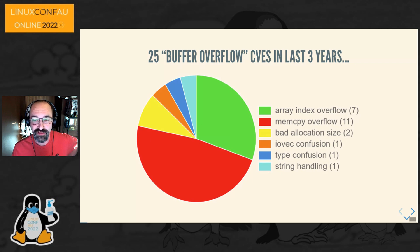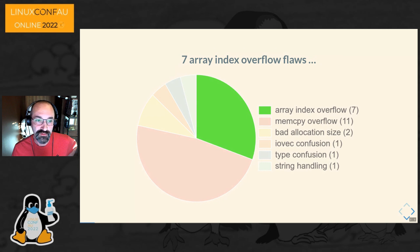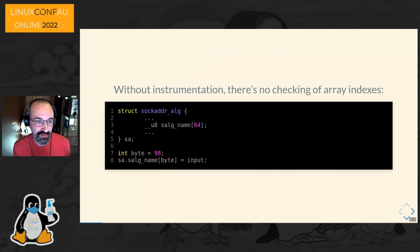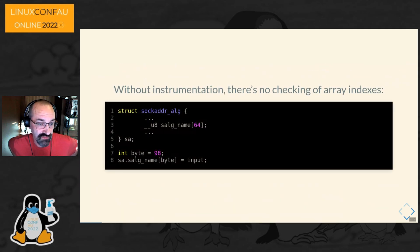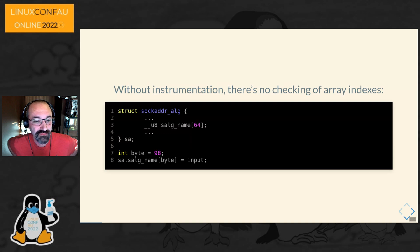As a data analysis step, I looked at the last three years or so of any kernel CVEs that mentioned buffer overflow and tried to root cause them. One of the categories — though not the largest — is array index overflows. Looking at that, there were seven out of those 25 that we looked at. The good news is that these are pretty well solvable. You've got an algorithm name that was 64 bytes long, and if you access it beyond the 64th byte with no instrumentation, it would just happily access memory beyond the end of that buffer and badness would ensue.